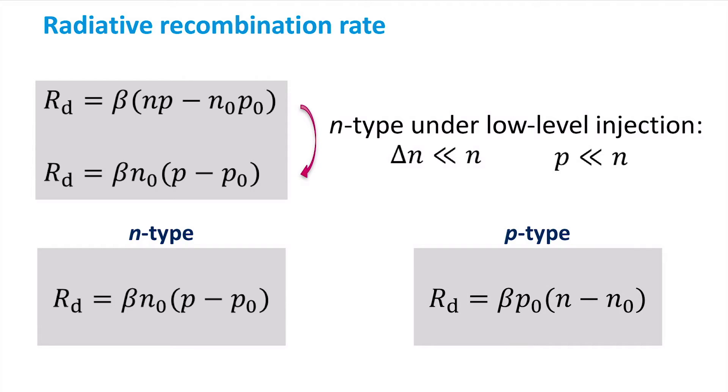A similar derivation can be applied to P-type semiconductors, resulting in the following equation where N and P are interchanged.